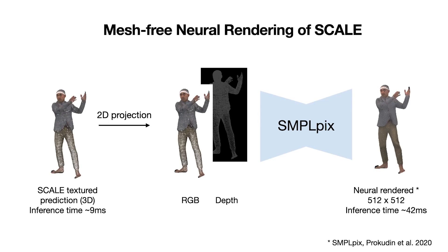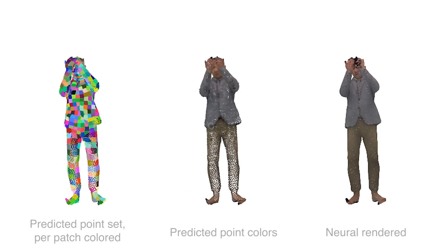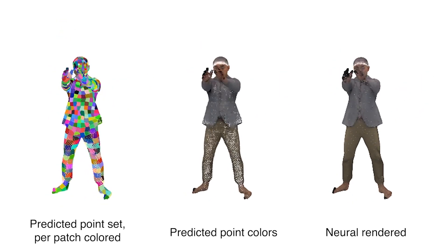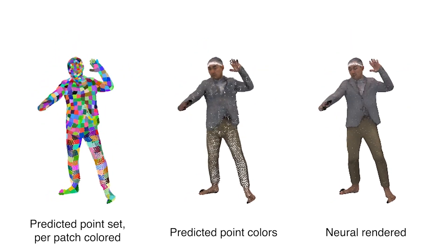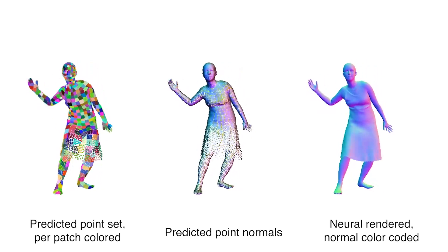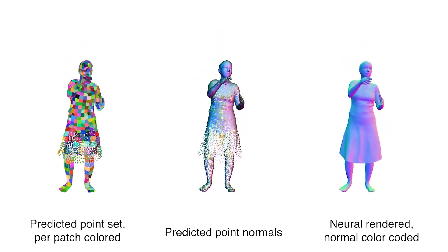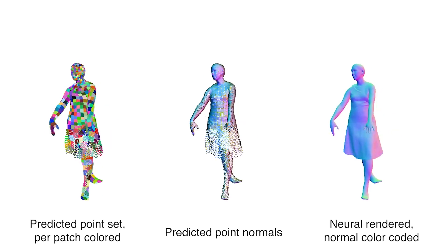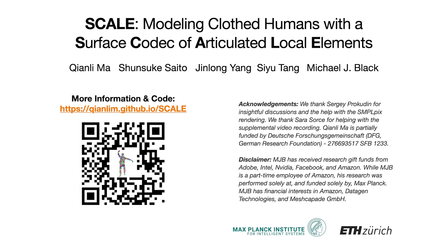The dense point cloud can be directly rendered into realistic images using a state-of-the-art point-based renderer called SimplePix. For more details, please refer to the supplementary text. In summary, we introduce SCALE, a highly flexible explicit shape representation using a large number of articulated local elements. SCALE is fast, expressive, and highly generalizable to unseen poses. As a result, SCALE enables learning of high-quality clothed humans from point clouds without surface correspondence. The code is available for future research of clothed human analysis and synthesis. Please visit our project website for more information. Thank you for your time.